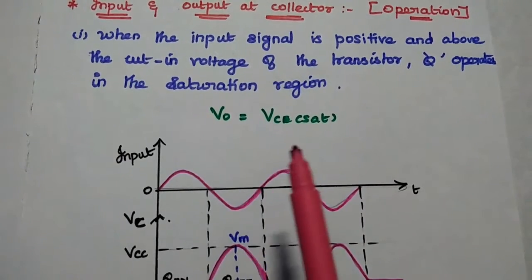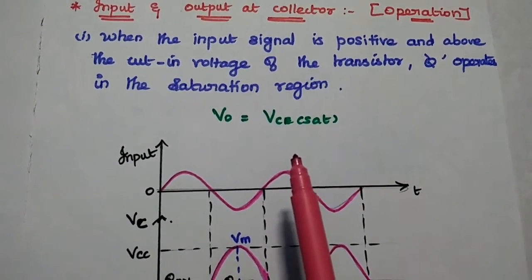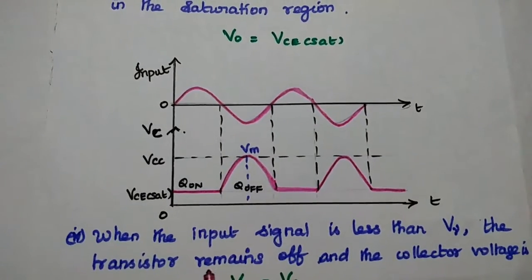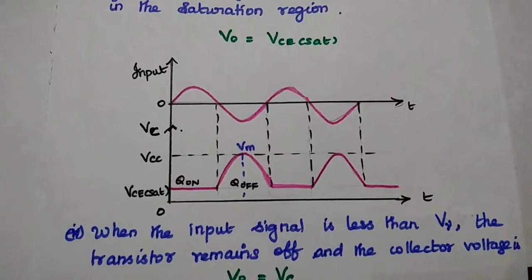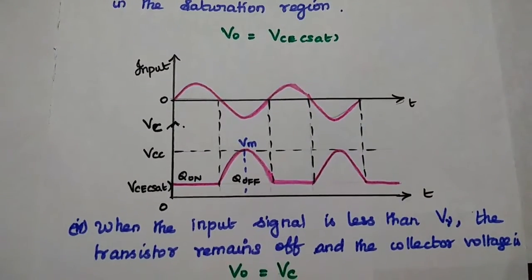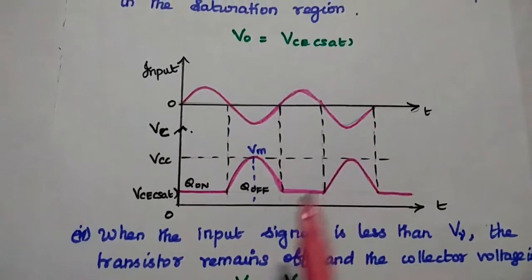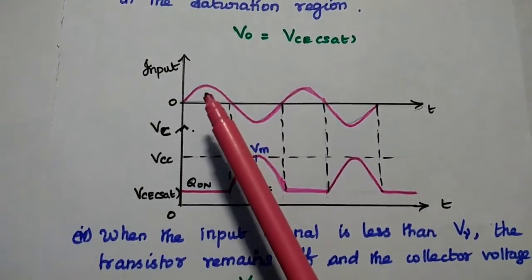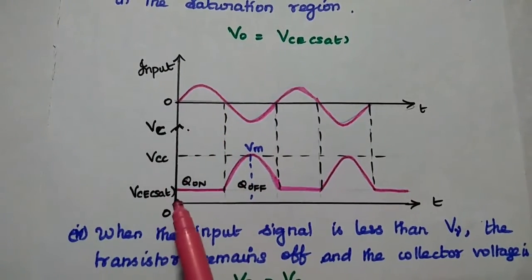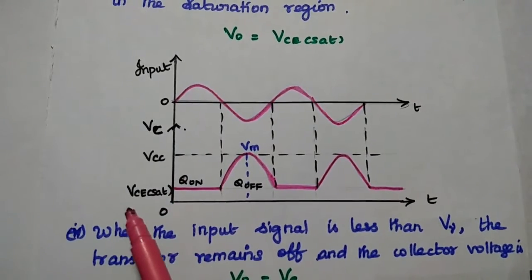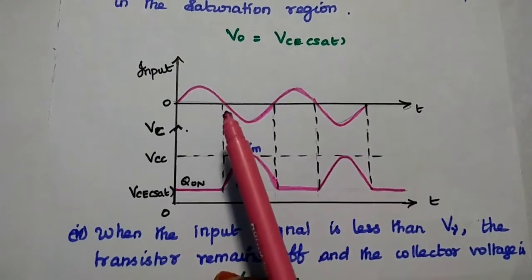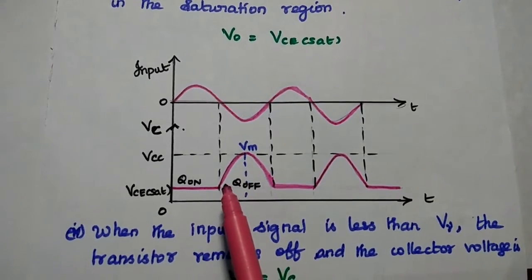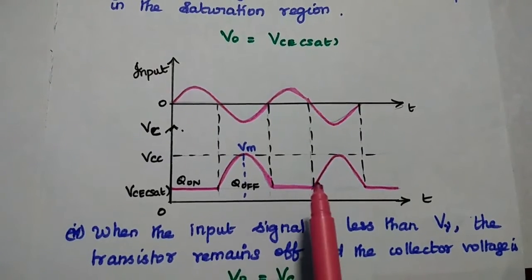At that time the output voltage is equal to the saturated voltage between collector and emitter. Whenever the input signal is less than the cut-in voltage, the transistor remains off and the collector voltage is simply the output signal. These two conditions are given in this diagram. Whenever the input signal is positive as well as above the cut-in voltage, the output at the collector side is equal to the saturated voltage — it is constant. Whenever the input signal is below the cut-in voltage, the transistor is in the off condition and the output is simply the input signal.